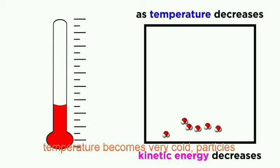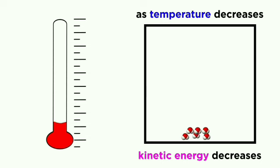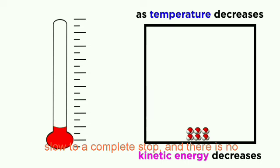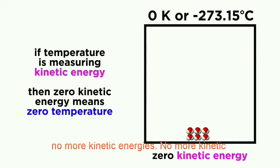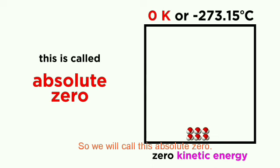As the temperature becomes very cold, particles slow to a complete stop, and there is no more kinetic energy. No more kinetic energy of motion means no more temperature by any real definition of the term. So we will call this absolute zero.